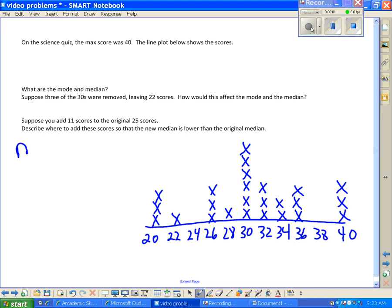On the science quiz, the max score was 40. The line plot shows the scores. What are the mode and median? Suppose three of the 30s were removed, leaving 22 scores. How would this affect the mode and the median? The mode is 30 and the median is 30.